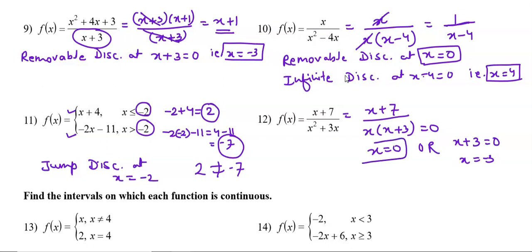There are two values of x with infinite discontinuity: x = 0 and x = -3.